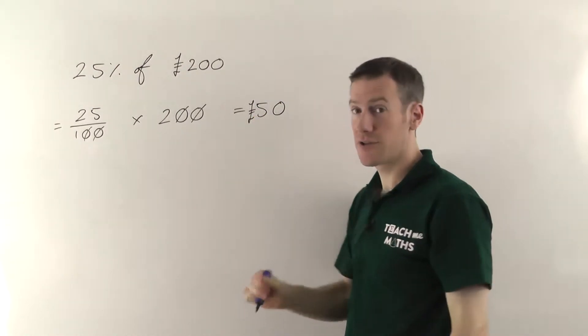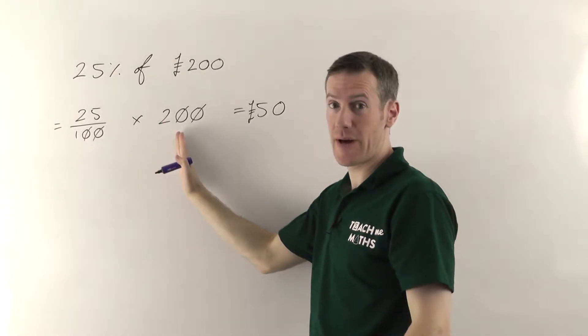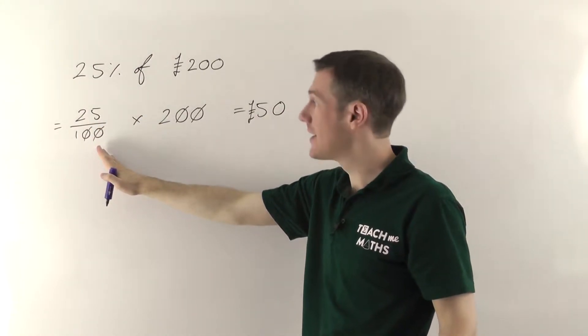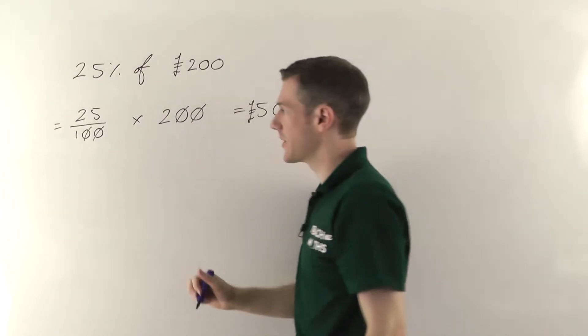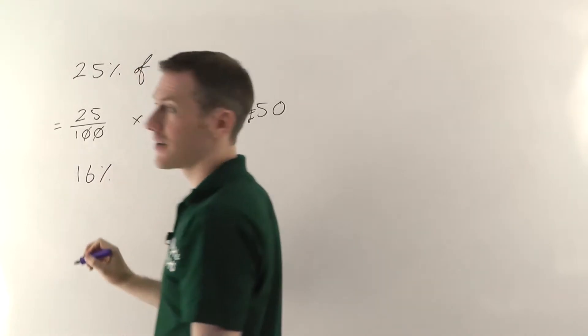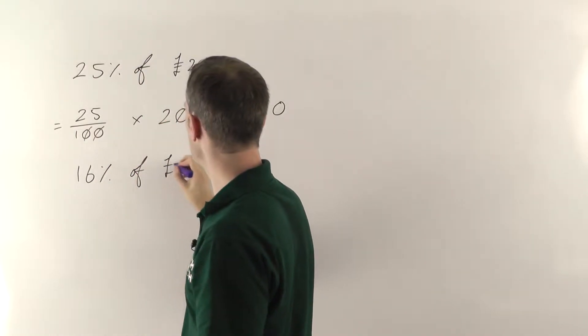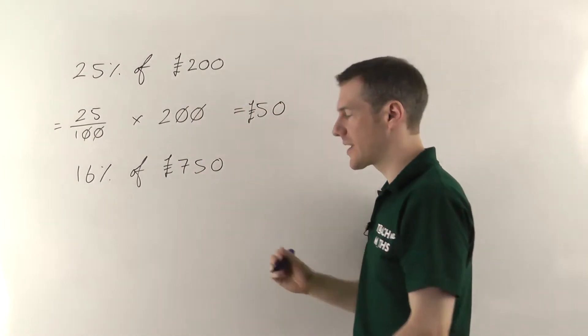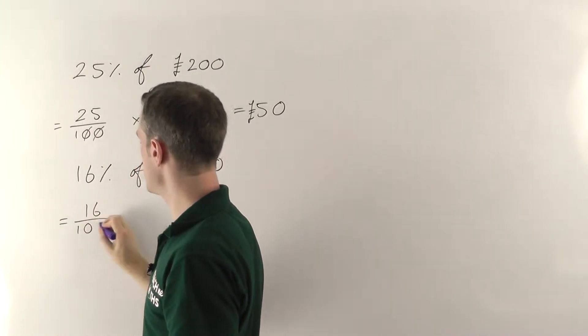All right, I'll just try one more example but essentially you're not doing anything different here than when you're finding fractions of amounts. Just convert the percentage into a fraction over 100 and then times if you're finding the percentage of something. All right, let's try 16%, we'll try a harder one this time, of 750 pounds.